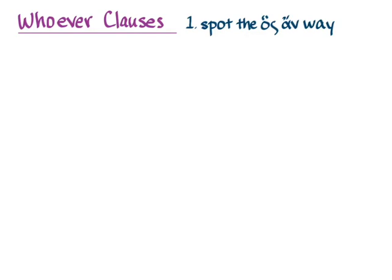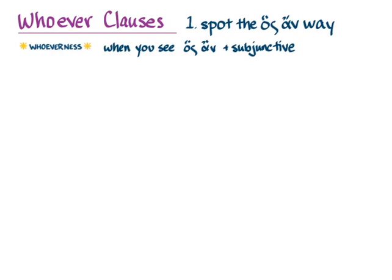For me, the switch flips on 'whoever-ness' whenever I see hoss-an and the subjunctive, which is the most common form of the whoever clause. I see that and I think immediately 'whoever,' and I make sure that I use the relative pronoun in the correct case and just translate the rest of the sentence in a straightforward way. So, first example.